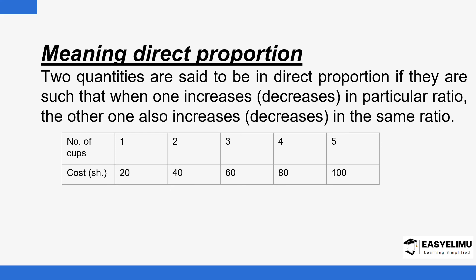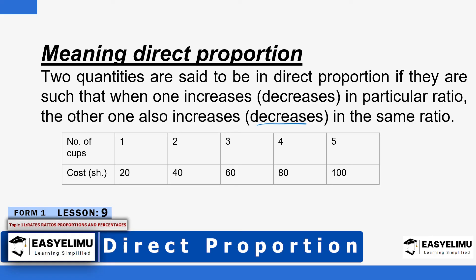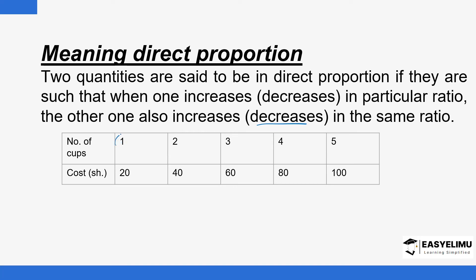So what does it mean when you talk about direct proportion? Two quantities are said to be in direct proportion if one is increasing in a particular ratio, then the other one also increases in the same ratio. The same applies when there is a decrease — if one is decreasing in a particular ratio, the other one also decreases in the same ratio. That is when the two can be said to be in direct proportion.